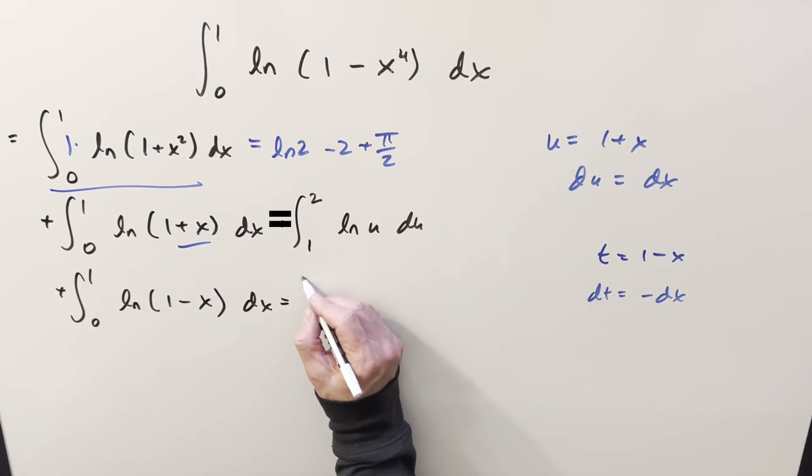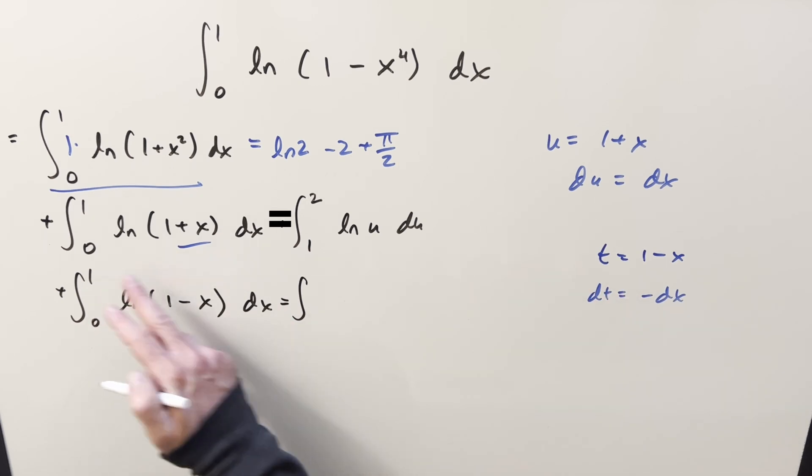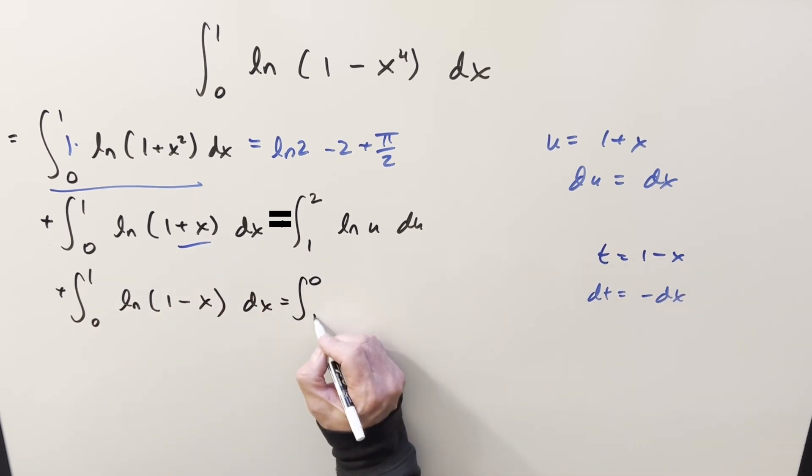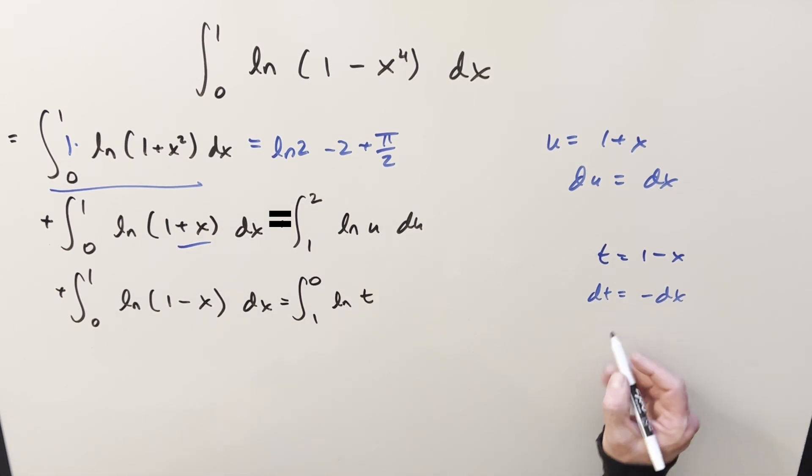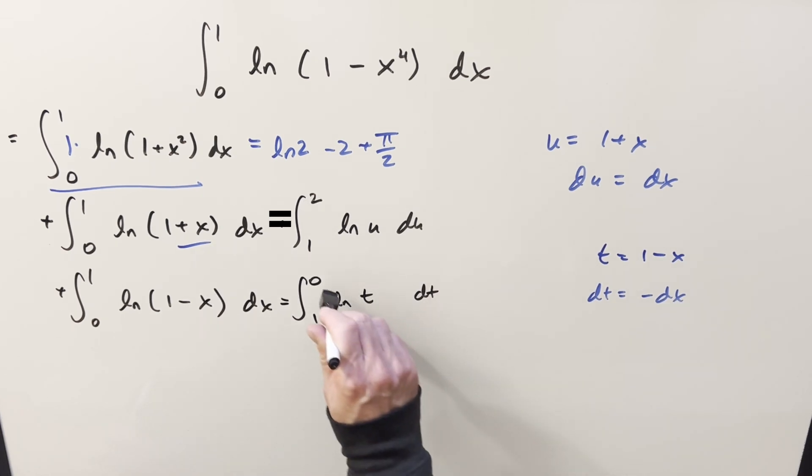Here, kind of similar on the second one, except when you plug in one, you get zero. You plug in zero, you get one. So we flipped our bounds around. This is going to be ln t. And then you could rewrite this as dx equal minus dt. So we have a minus sign right here. But then use the minus sign to flip the bounds.